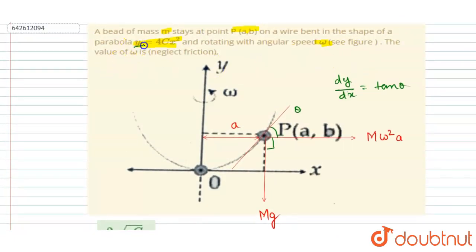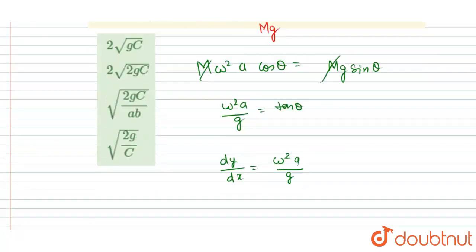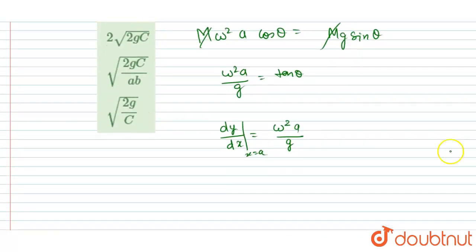The parabola is given as y = 4cx². Differentiating, dy/dx = 8cx. We need dy/dx evaluated at x = a, which gives dy/dx = 8ca.